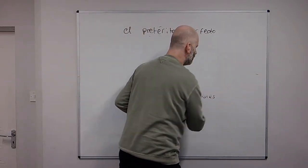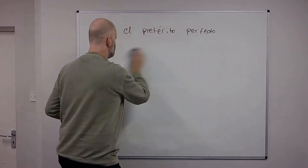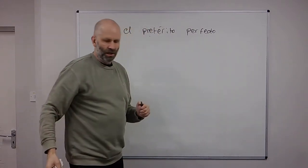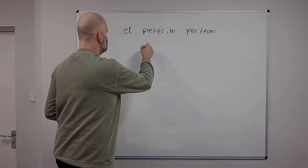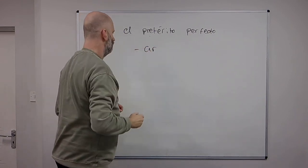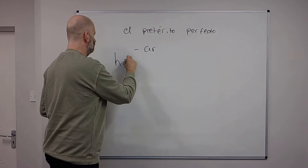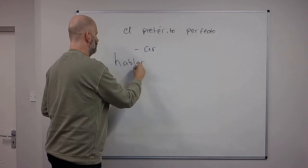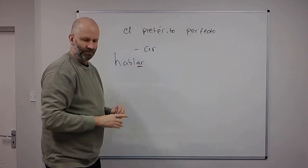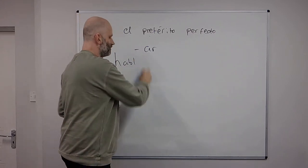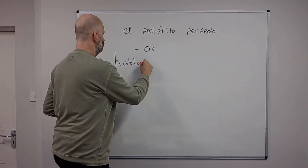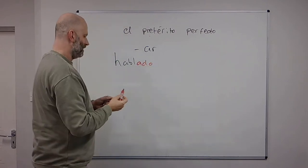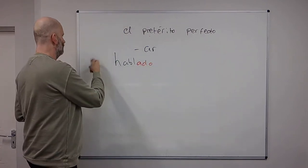So now we're going to look at how to form the past participle of verbs. So for AR verbs, for regular AR verbs like hablar, okay, so we take off the AR from the stem and just replace it with -ado: hablado. So if you want to say I've spoken, he hablado.